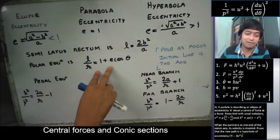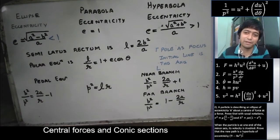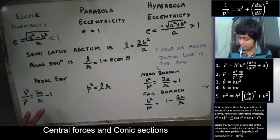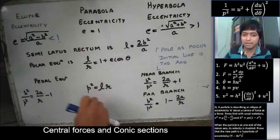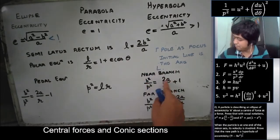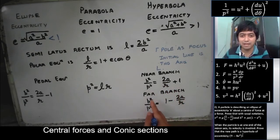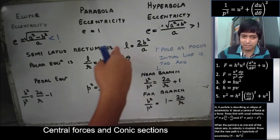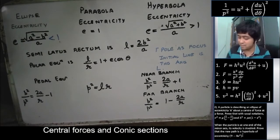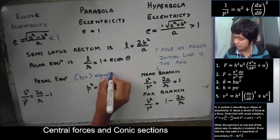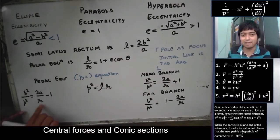The polar equation can be derived — if you need a derivation, feel free to use the comment section. We also have the pedal equation, which is b²/p² = 2a/r − 1 for the ellipse. b² = Lr for the parabola. For the hyperbola we have two pedal (PR) equations: b²/p² = 2a/r + 1 for the near branch, and b²/p² = 1 − 2a/r for the far branch.